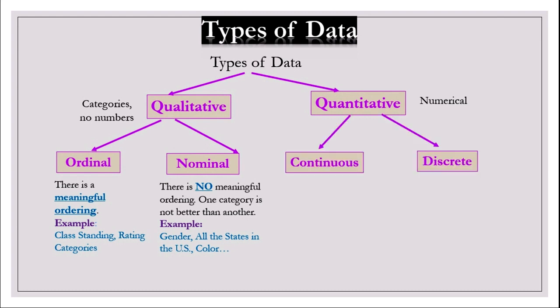The quantitative data can also be classified into continuous and discrete. What is the difference between them? For continuous data, it can be an infinite number of values. For example, time, weight, and volume, which means you can have decimals as many as you want.